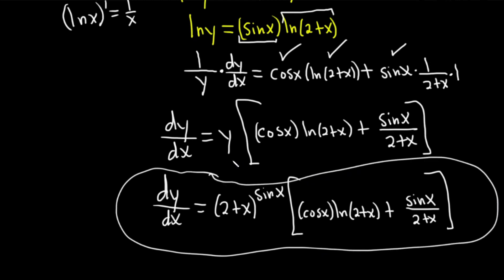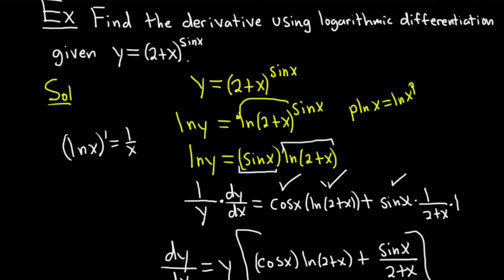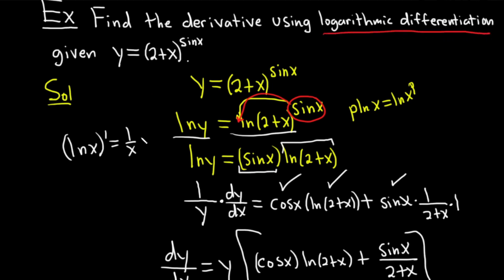That's how you use logarithmic differentiation. A quick recap: whenever the question says logarithmic differentiation, first write down your problem, take the natural log of both sides, then bring down the exponent using the power rule, and differentiate — usually using the product rule. At the end, multiply by y. Even if the problem doesn't say to use logarithmic differentiation, you may still need it whenever you have a variable raised to a variable power.